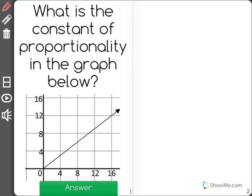What is the constant of proportionality in the graph below? We could think of constant of proportionality as rise over run. Now what I mean by that is how much do you go up for how far you go over?